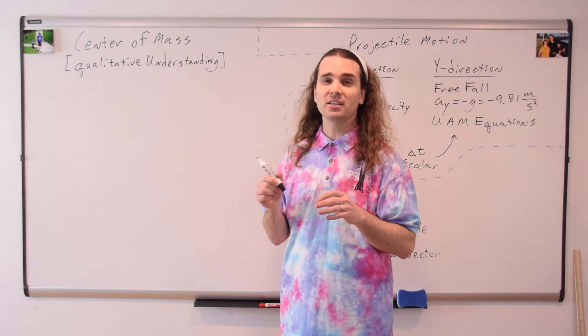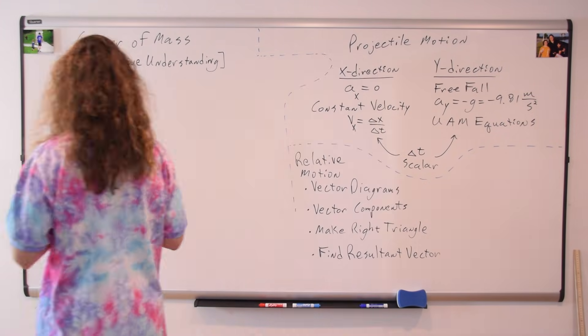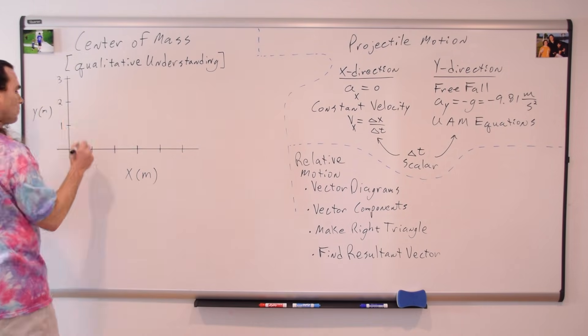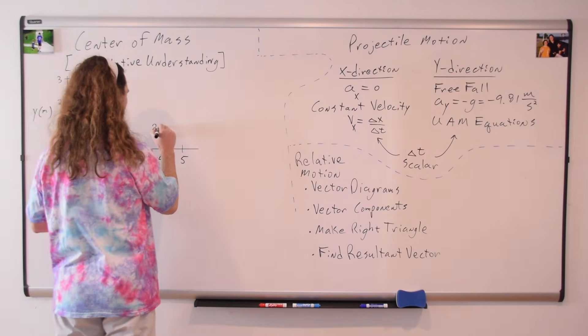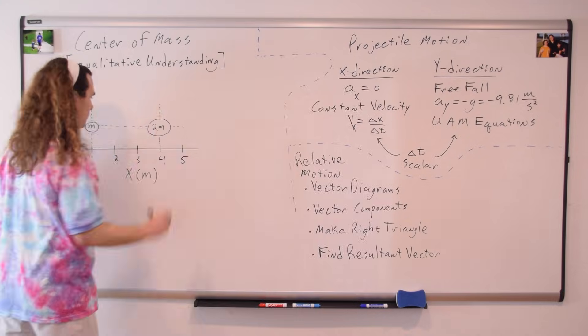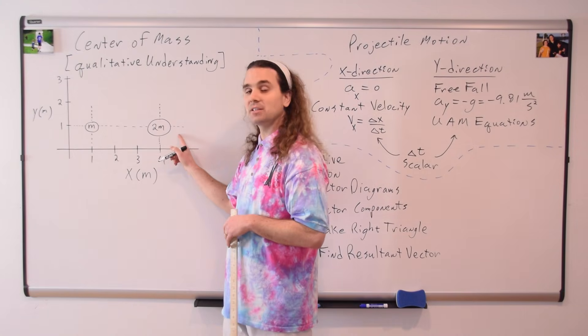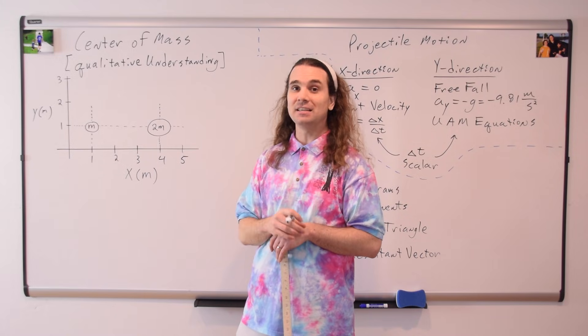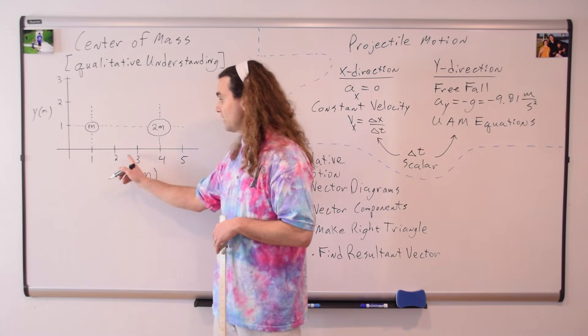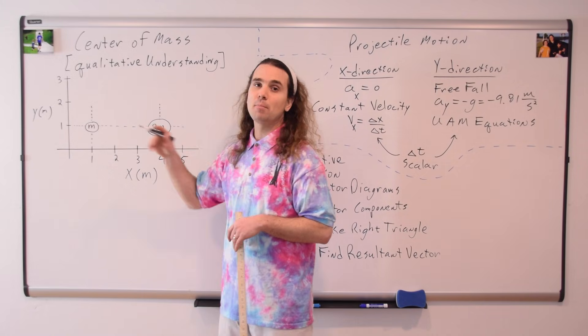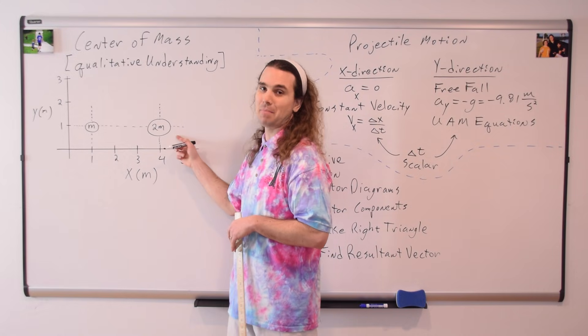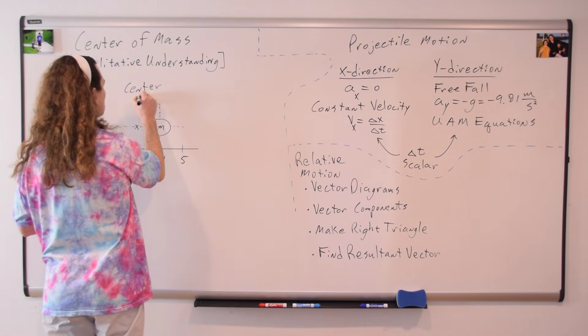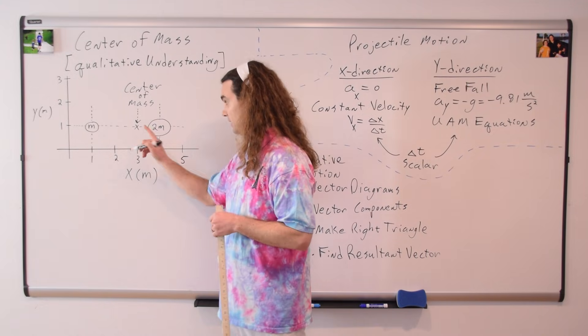So you need to be able to look at a system of objects like this one. And know that, because the object on the right is more massive than the object on the left, then the x center of mass of these two objects is not located directly between the two of them, but rather closer to the larger mass object, and therefore approximately right here.